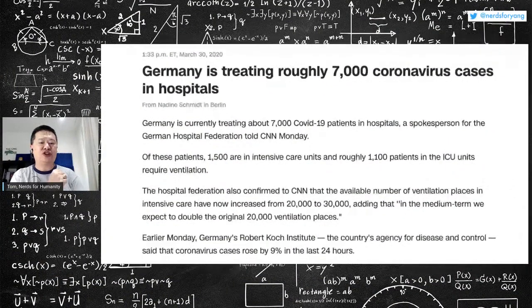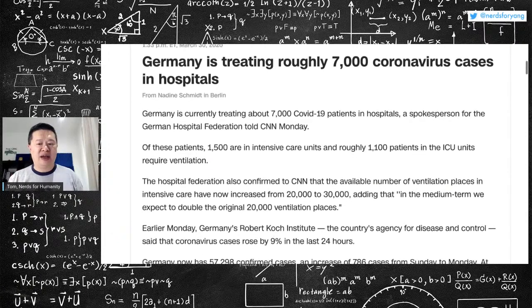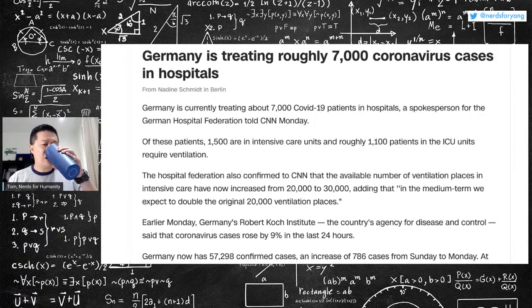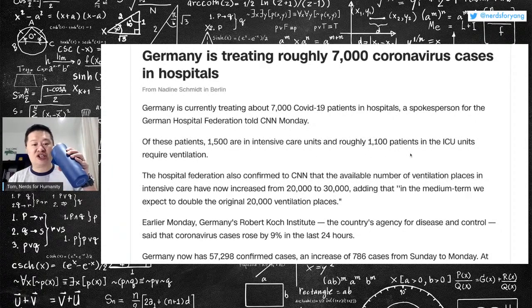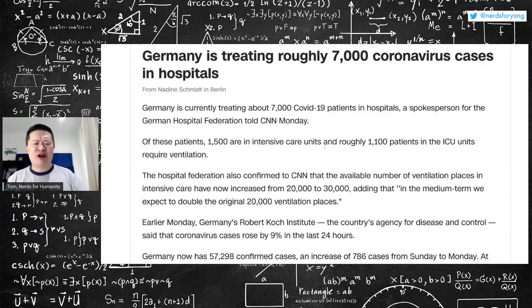This I found very encouraging. So this is just a few days ago. Germany is treating 7,000 patients, and they tell you how many are in ICU and how many require ventilation. Pretty much everyone in ICU, 1,100 out of 1,500 require ventilation.